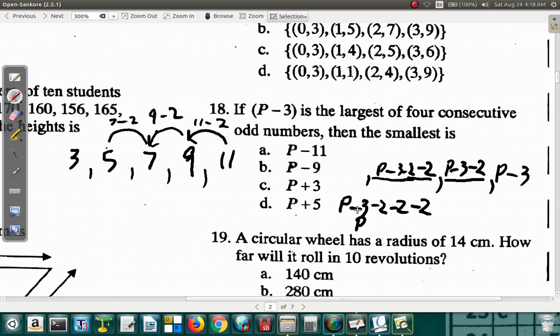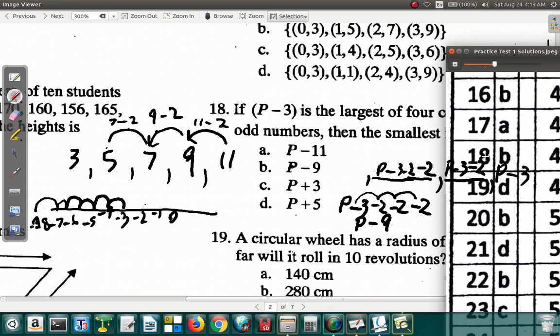So what happens here? P minus 3—negative 3 minus 2 is negative 5, minus 2 that's negative 7, minus 2 more that's negative 9. Remember, it's like you have the number line: 0, negative 1, negative 2, negative 3, negative 4, negative 5, negative 6, negative 7, negative 8, negative 9. You're at negative 3, minus 2 you end up at negative 5, minus 2 more gives negative 7, minus 2 more gives negative 9. So it's P minus 9. 18 is B. Question 18 is B. Let's just take a break here and move on next time.